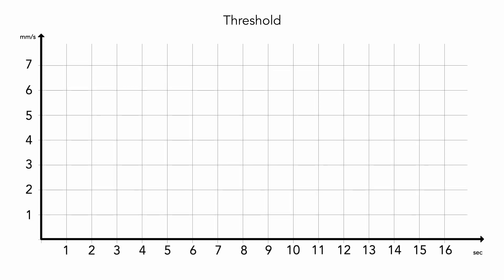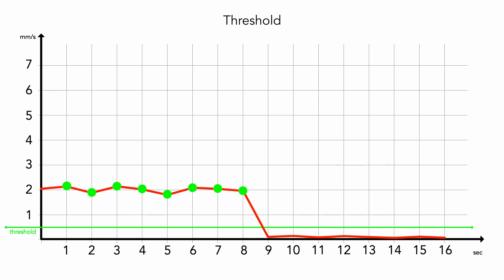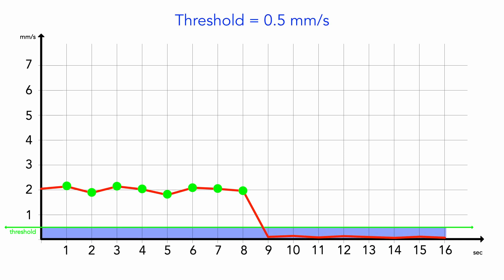Another parameter which helps with data reduction is minimum threshold value. This parameter is used, for example, for machines which are not running continuously. There are still some vibrations above zero, even if the machine is turned off — there remains some noise which is still measured. In this case we use a threshold: all values below this threshold are not saved. So if we set it to, for example, 0.5 mm/s, then lower noise values will not be saved, as you can see in the picture.